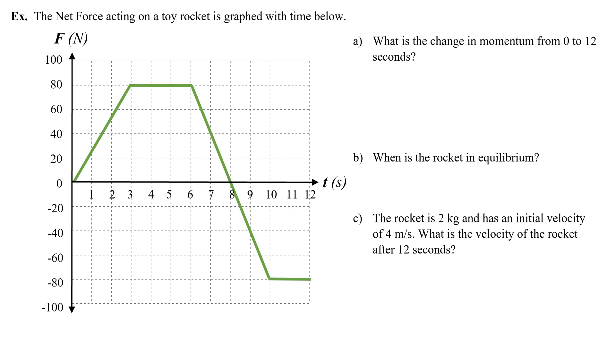Let's do an example problem. The net force acting on a toy rocket is graphed with time below. What is the change in momentum from 0 to 12 seconds? Quick notice that the net force right here just says F. Occasionally you'll find that on equation sheets they will stop calling this the net force and just use F, and it's implied that it's the net force. So what is the change in momentum from 0 to 12 seconds? Well, that's asking me to look at all of this area. If I can figure out what all of that area represents, then I can say what the change in momentum is.